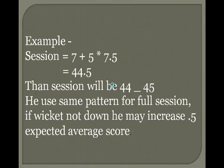Example: session 7 plus 5 multiplied by 7.5 equals 44.5 — then session will be offered at 44-45. He uses the same pattern for the full session. If no wicket down, he may increase the expected average score by 0.5.